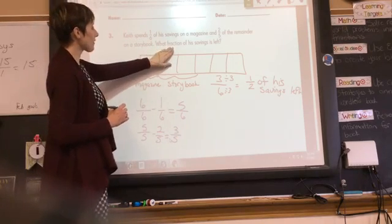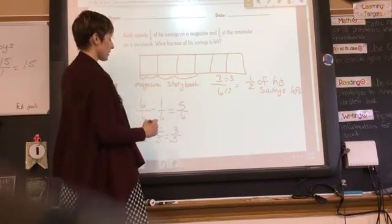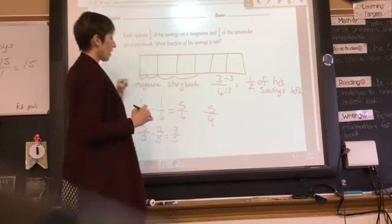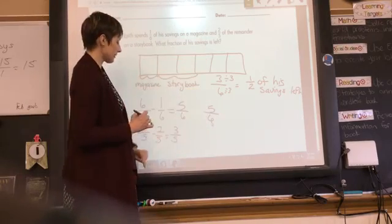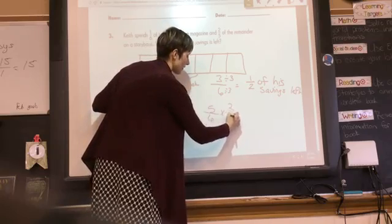The question is asking what fraction of the savings is left. So, our remainder was five-sixths. Three-fifths of that is what remains.